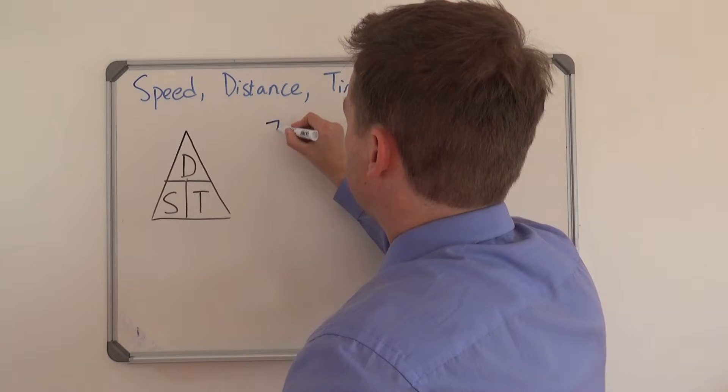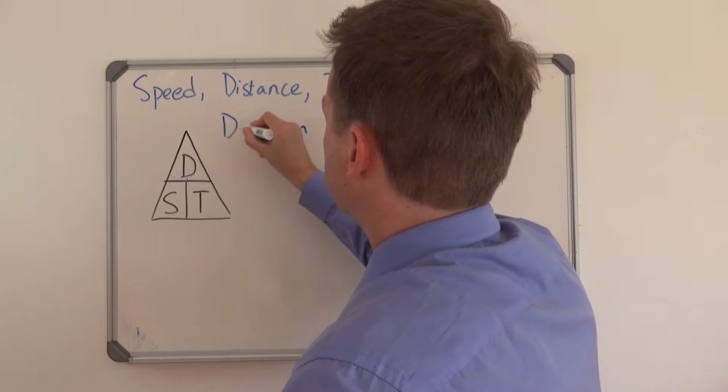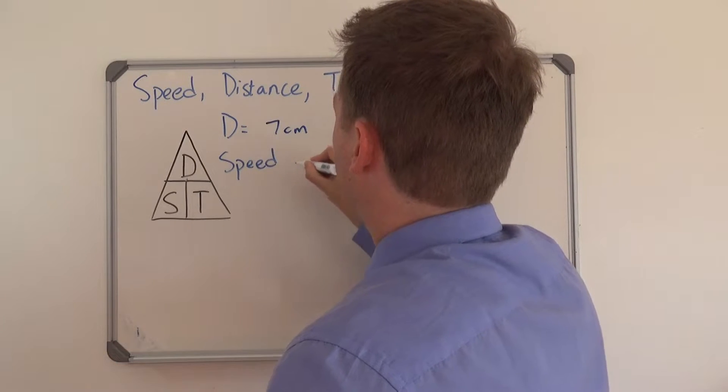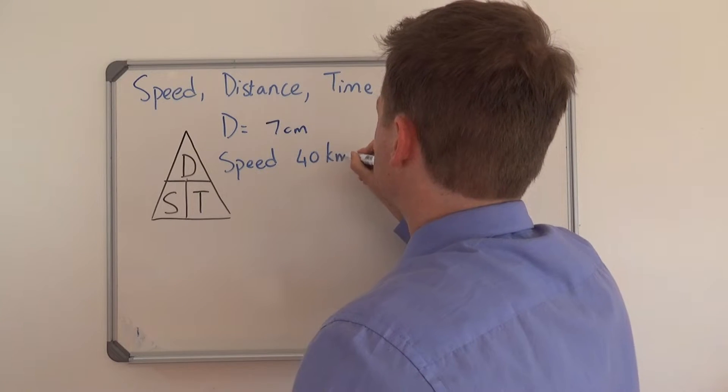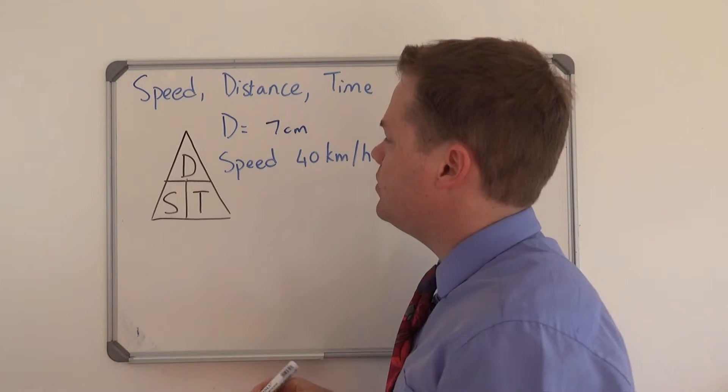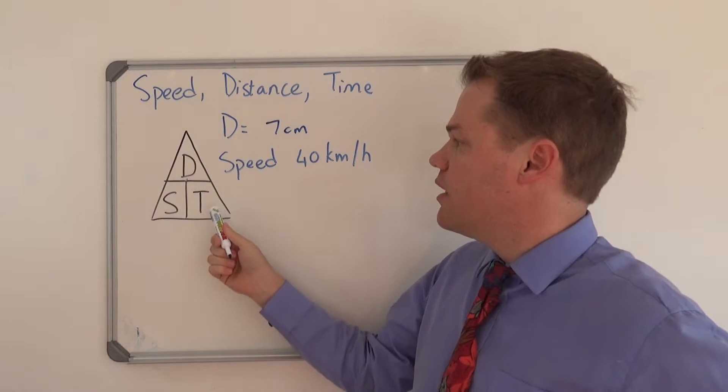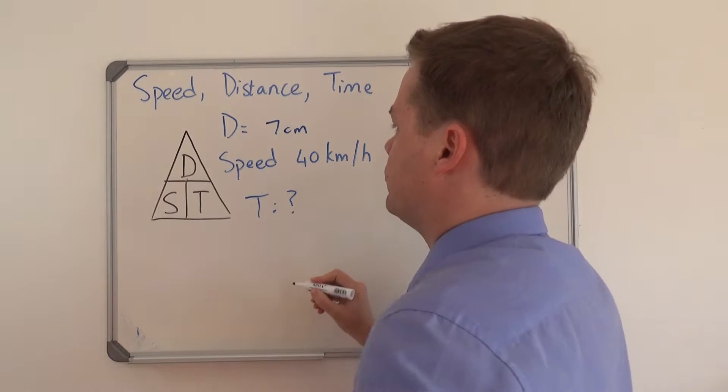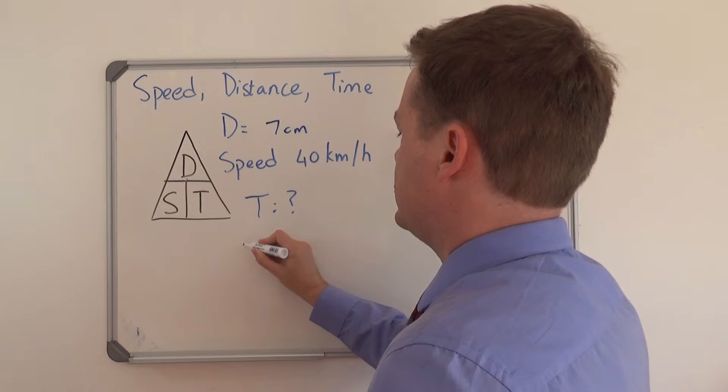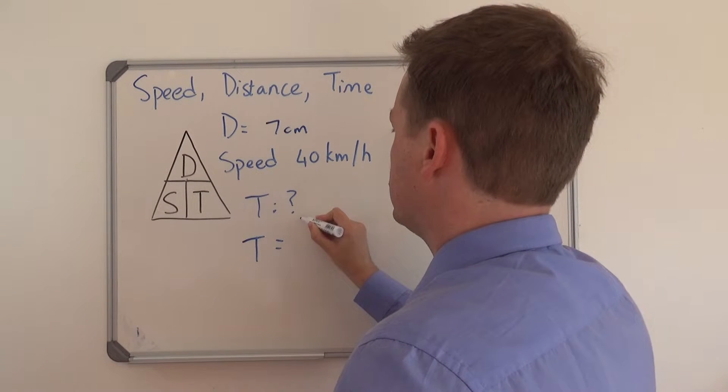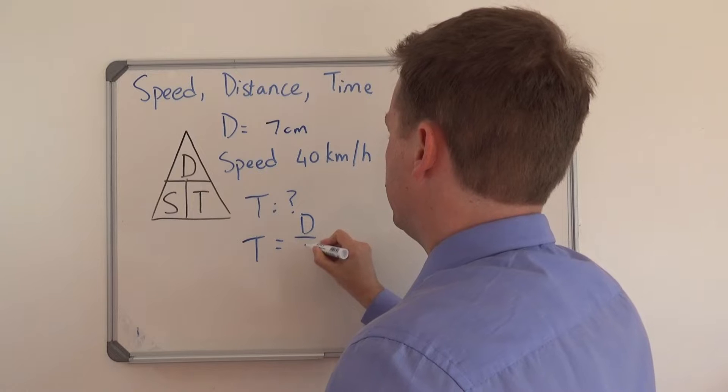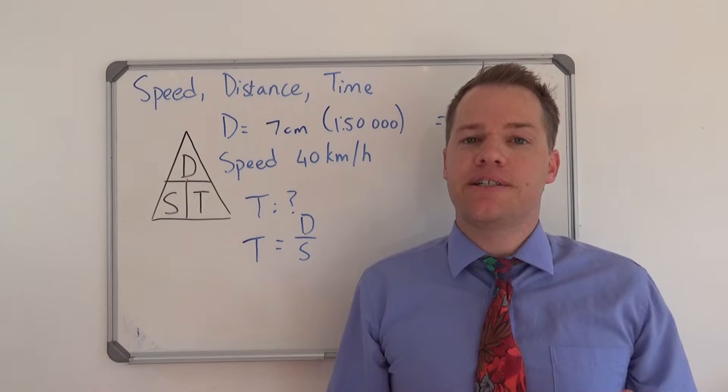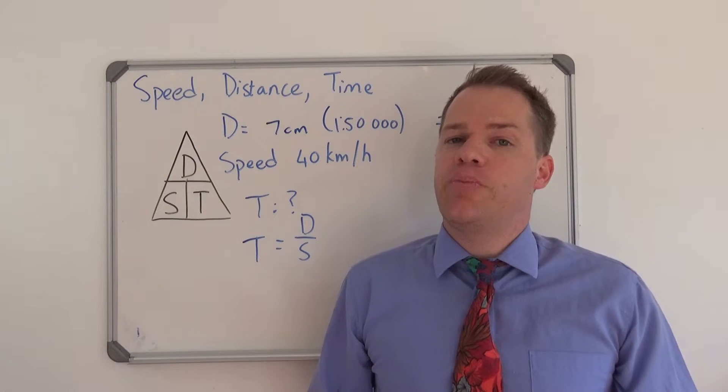is seven centimeters. Okay, so this is the distance and the speed is 40 kilometers per hour. So we want to calculate the time. This is what we do not know. And so the formula is going to be time equals distance divided by speed. Important to be able to calculate distance.